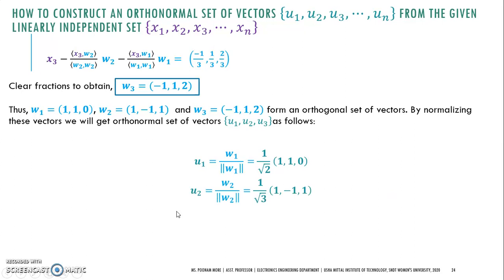Similarly, U₂ can be calculated by dividing W₂ by its norm value, and U₃ by dividing W₃ by its norm value. Hence, we find the orthonormal set of vectors U₁, U₂, and U₃ from the linearly independent set X₁, X₂, X₃.